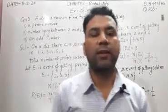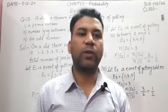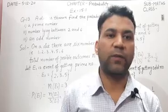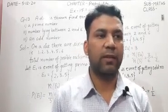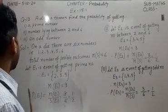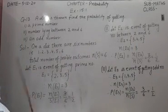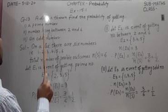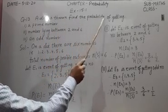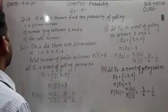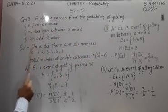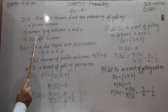Hello everyone. In this video we will discuss question number 13 of chapter 15, exercise 15.1. The question states: a die is thrown, find the probability of getting — first part, a prime number; second part,